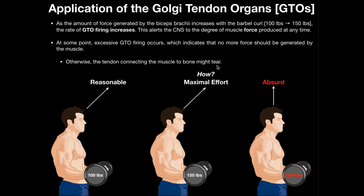However, at some point you can get excessive GTO firing, meaning the muscle is having to generate so much force that it could actually damage the tendon. If you reach a force where the tendon could be damaged, the muscles should stop producing more force. His maximum effort is 150 pounds, but if you asked this person to bicep curl 2000 pounds, that would be impossible.